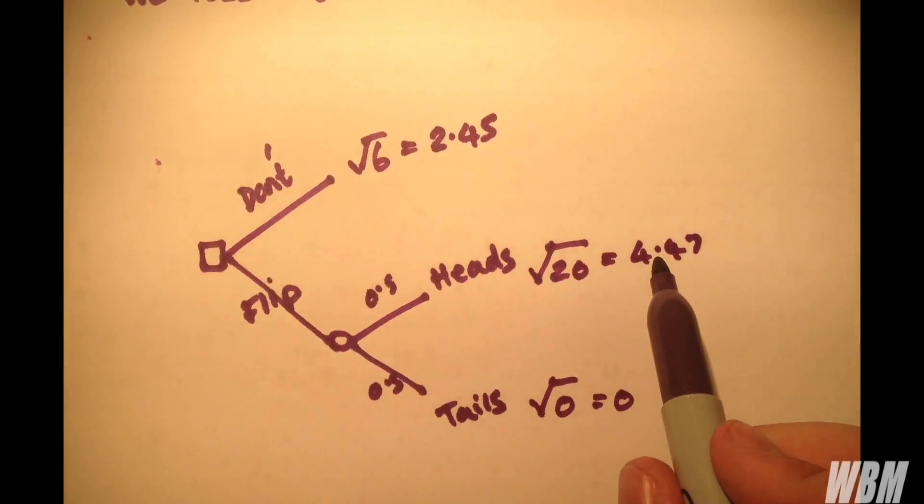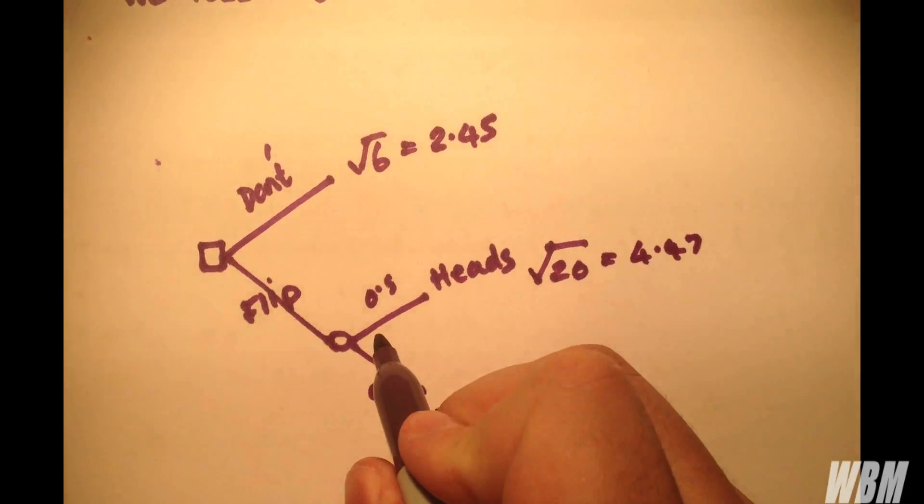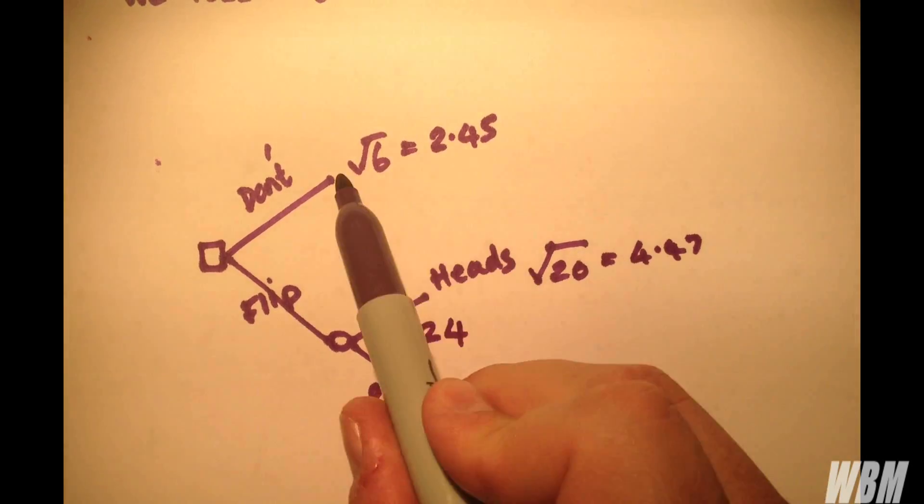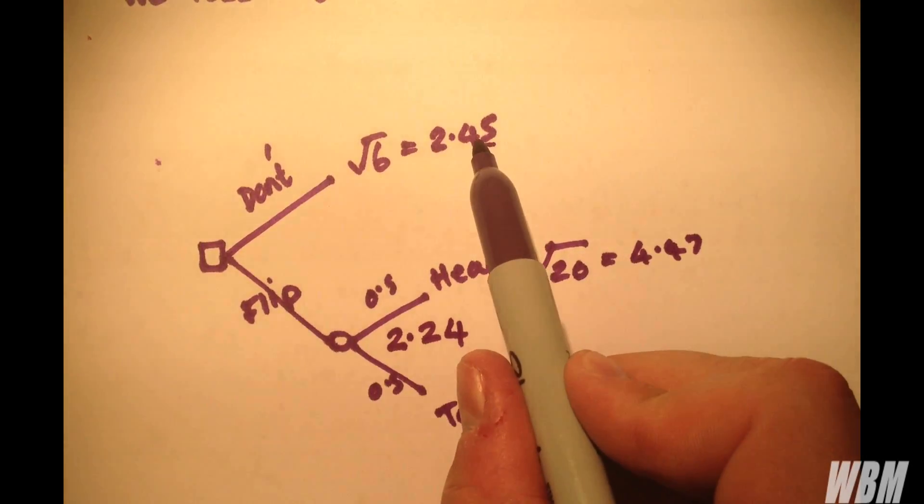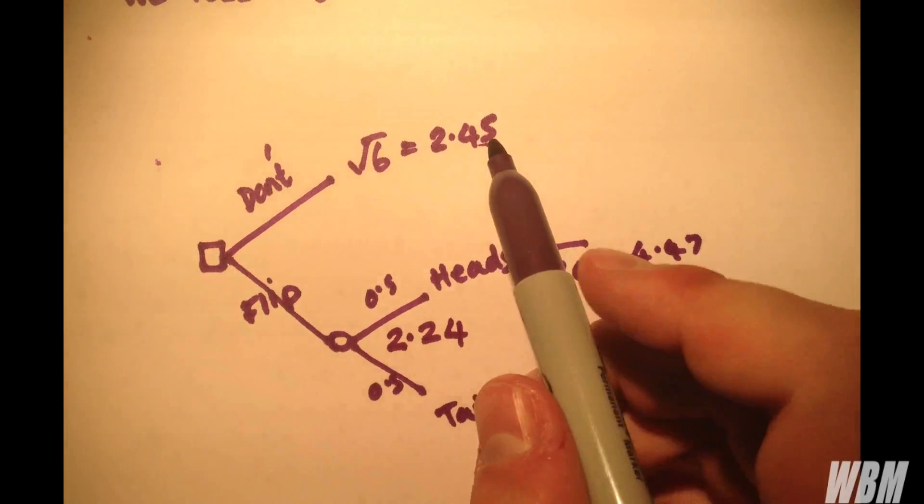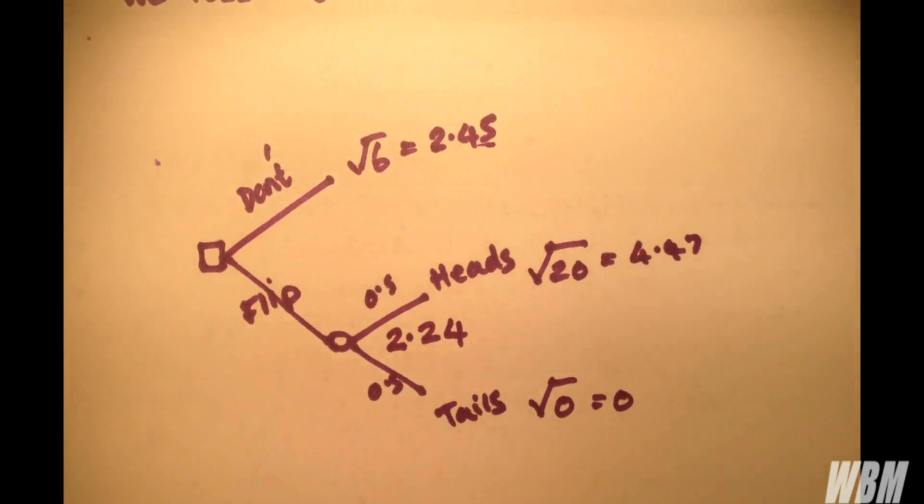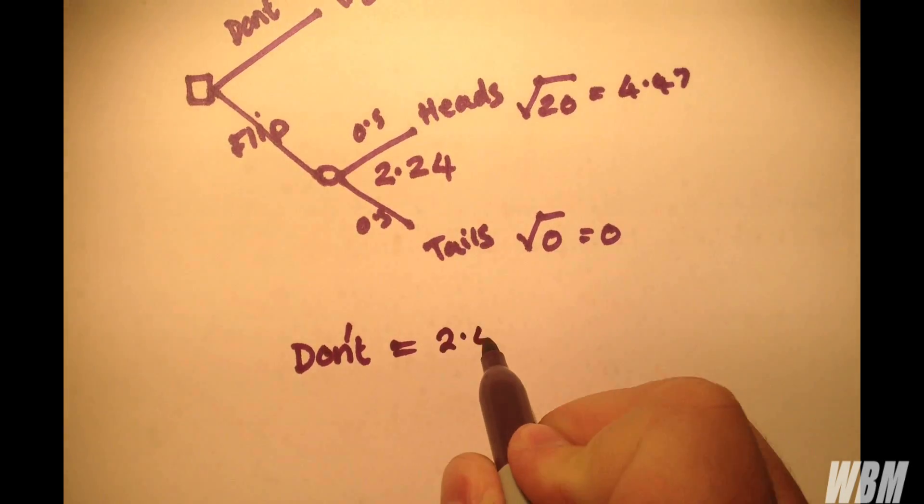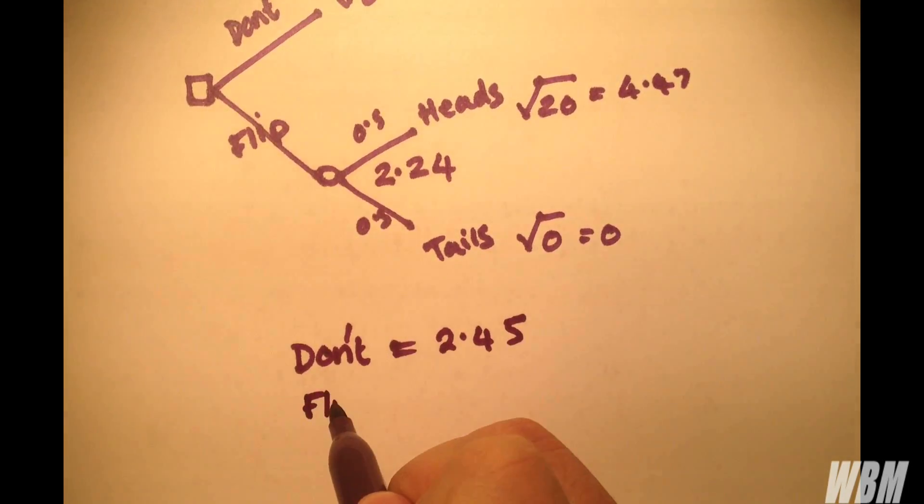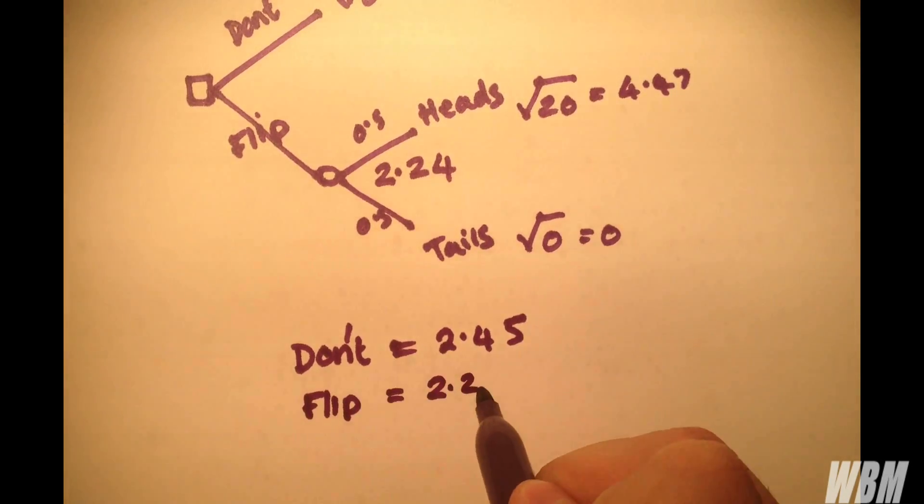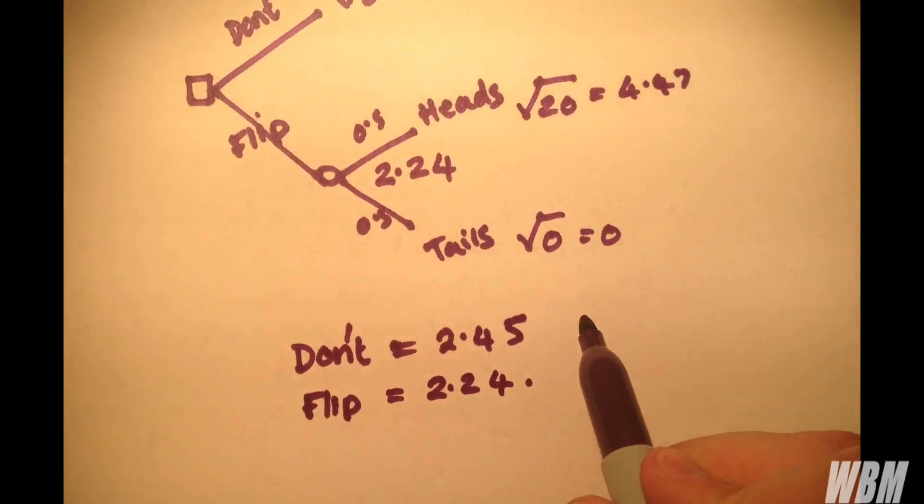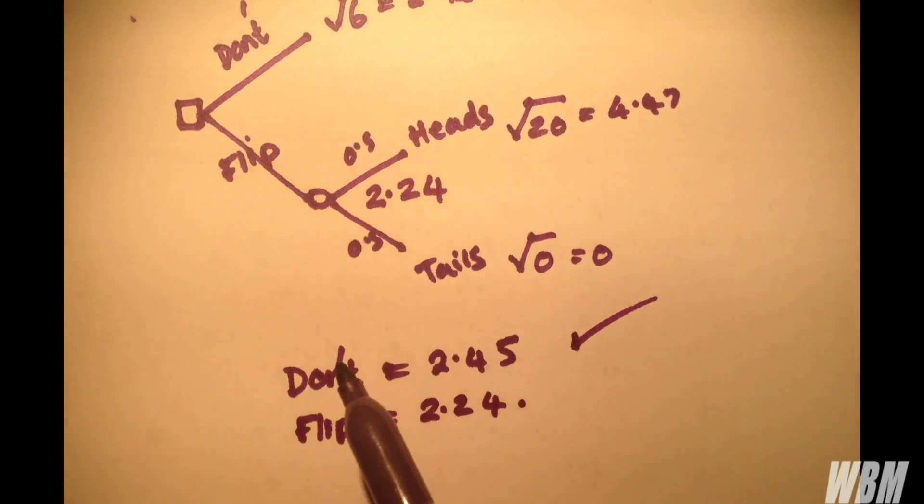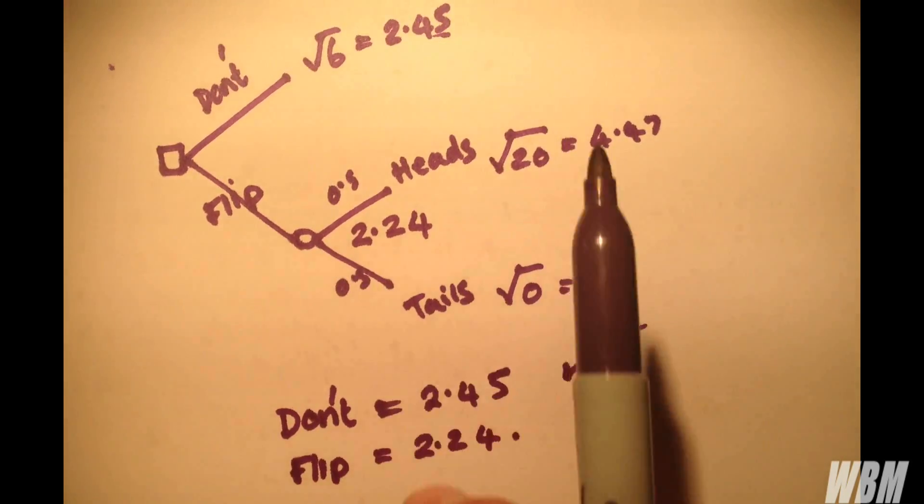So 0.5 times by 4.47 gives us an answer of 2.24. And we don't obviously have any probability involved here because we know we are due 2.45. So what do we do? If we don't flip, we have 2.45. If we do flip, we would be due 2.24. So we've been told by the risk-averse utility function where we take the roots not to flip and to take the 6 straight away.